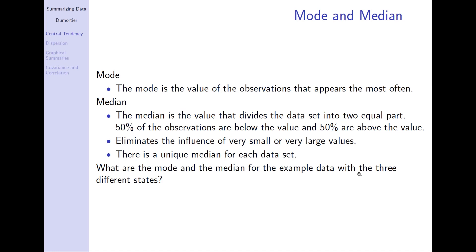To avoid this type of problem, there are two additional measures of central tendency: the mode and the median. The mode is simply the value of the observation that appears most often. The median is the value that divides the dataset into two equal parts — 50% of the observations are below the value and 50% are above that value.